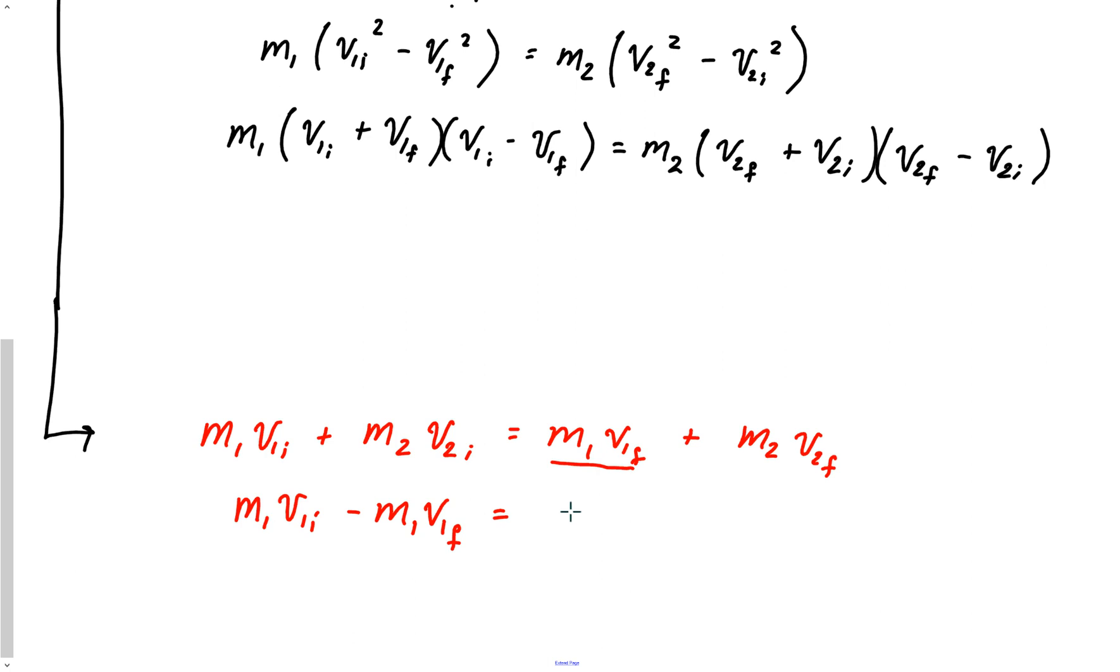I almost made a mistake moving this many years ahead. I told you this is a hard one to derive just from the standpoint of not goofing up. Now on the other side, I've got M2 V2 final minus M2 V2 initial. And now same thing, factor out M1, M1 times V1 initial minus V1 final is equal to M2 times V2 final minus V2 initial.